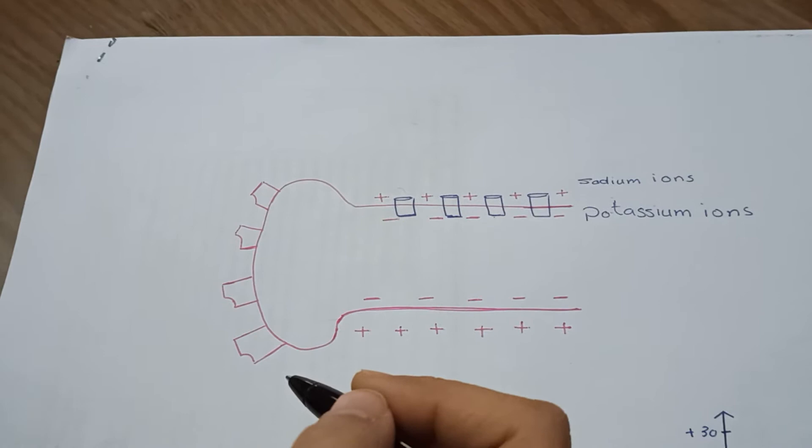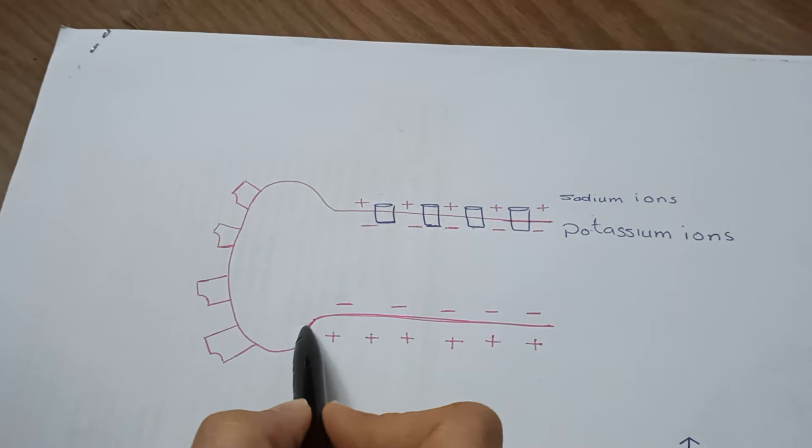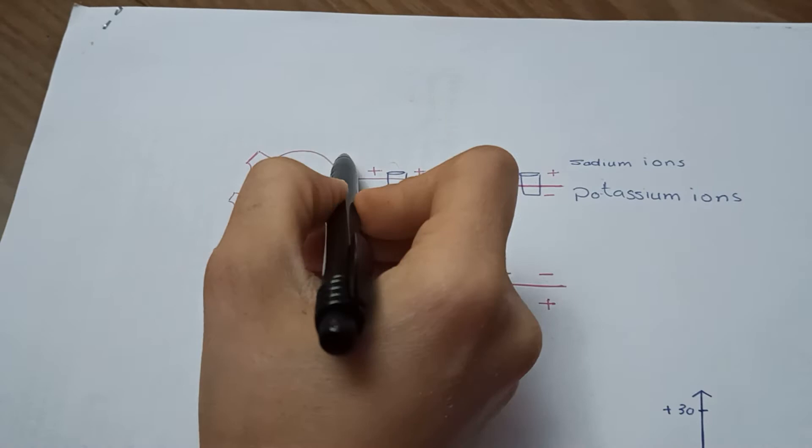So now we're going to learn how the action potential works. This is the shape of the neuron, the axon, the cell body.